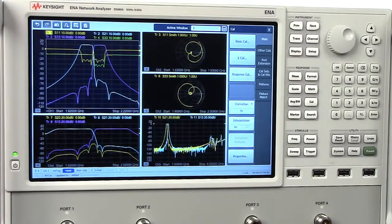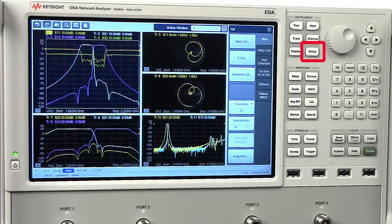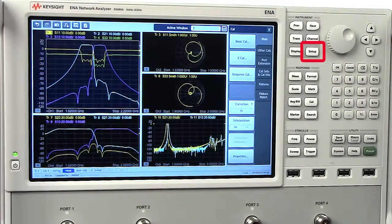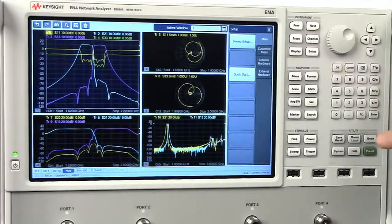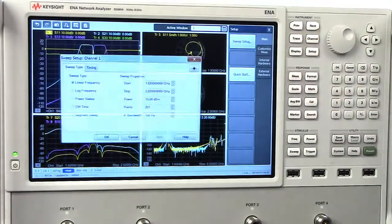In many cases, the best way to quickly start a measurement is the setup key in the instrument group. Pressing Setup activates a soft key menu that has two choices: Sweep Setup and Quick Start.